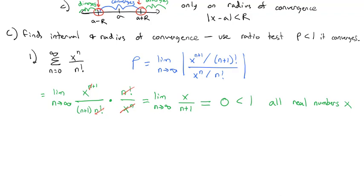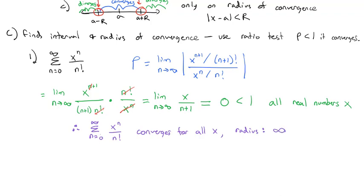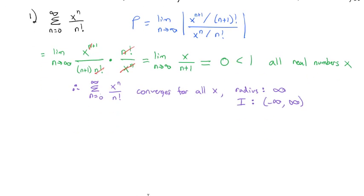Rho equals 0, which is less than 1 for all real numbers x. Whatever number I pick for x, rho will always be 0. So the sum as n goes from 0 to infinity of xⁿ/n! converges for all x. The radius of convergence is infinity, and expressed as an interval it converges from negative infinity to positive infinity.